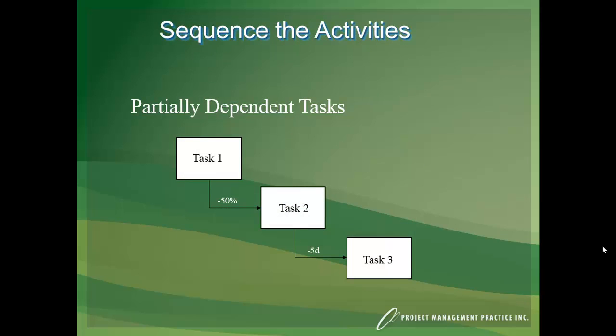We can also have partially dependent tasks or overlapping tasks. And in this case, what we're saying in task 1, halfway through start task 2. So we have a dependency, a finish to start relationship between task 1 and 2.